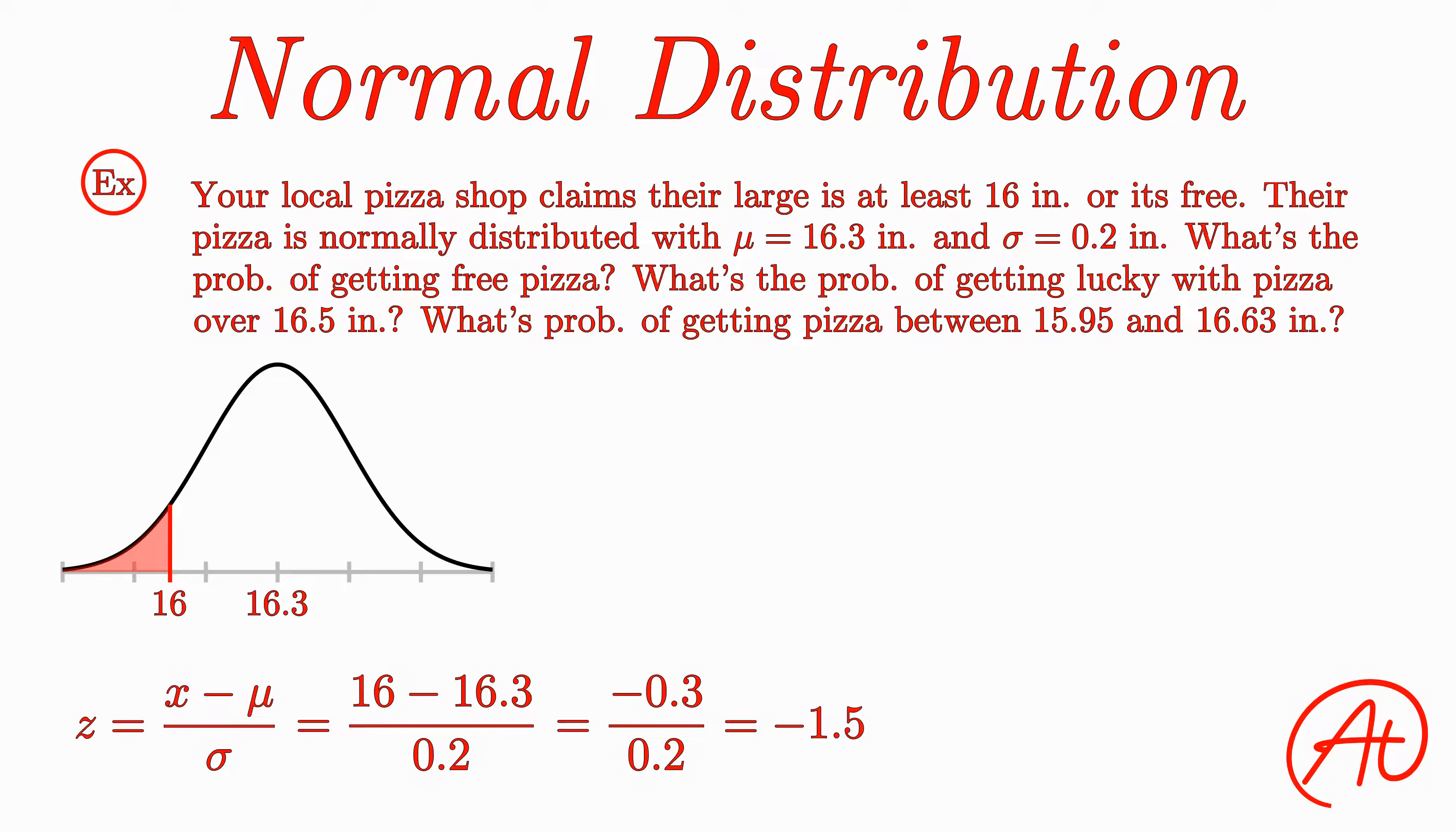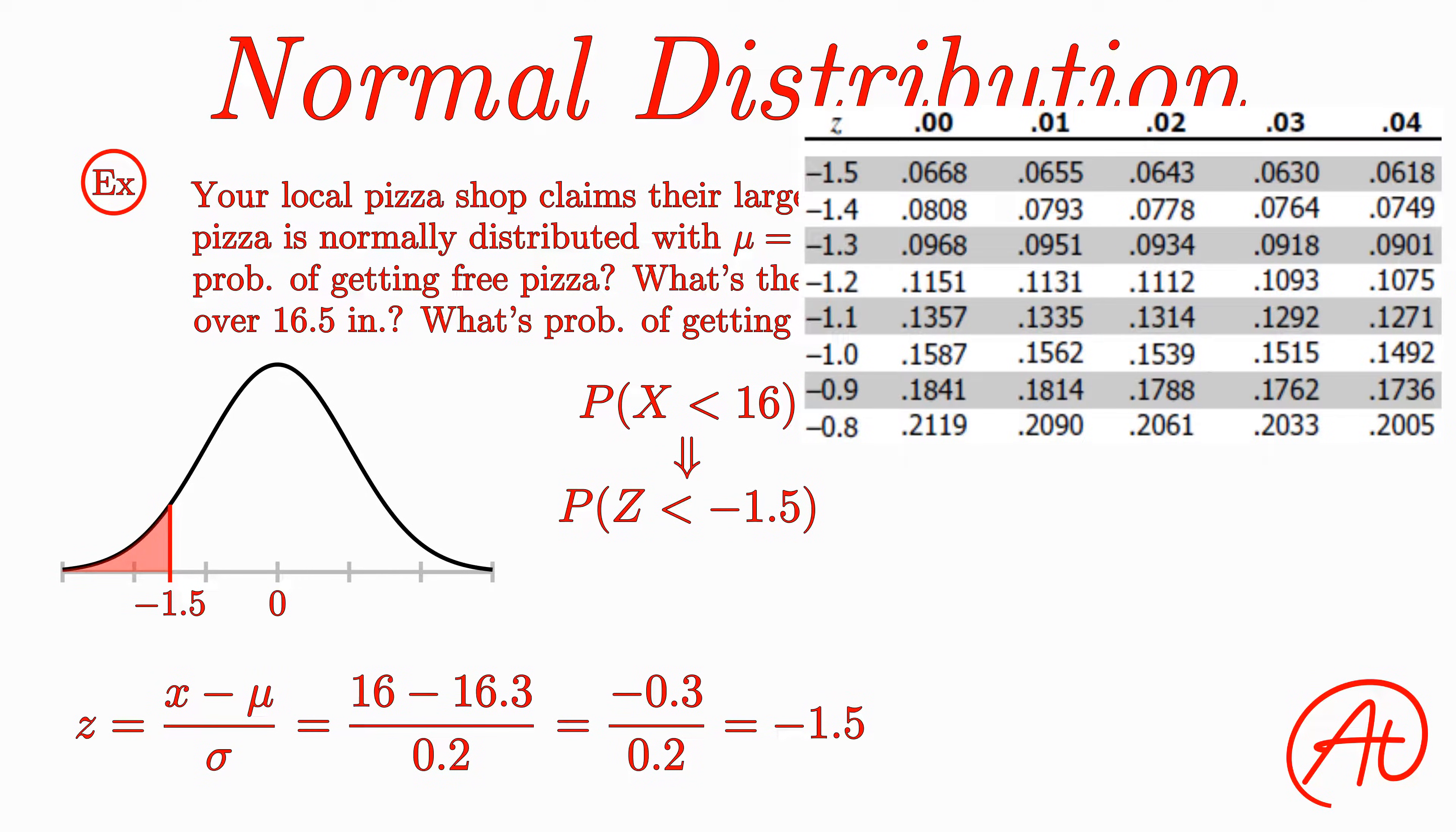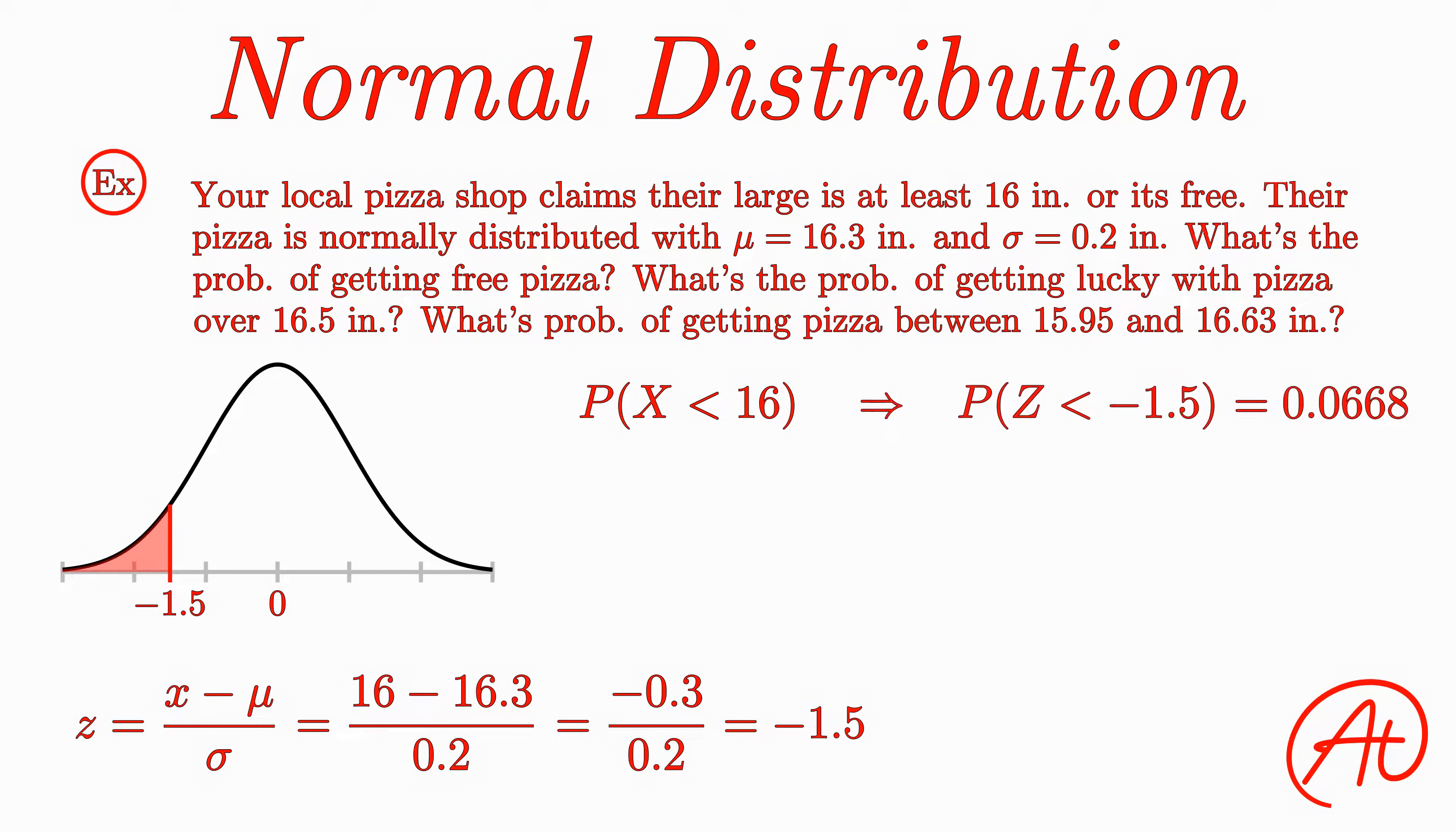So instead of finding the probability of a pizza being less than 16 inches, we are now finding the probability of a pizza having a z-score less than negative 1.5. Now that we have a z-score, we can use our z-chart to find its associated probability. Looking at row negative 1.5 and column 0.00, we find a probability of 0.0668. Since we want to find the probability of being less than our z-score, and that being exactly what the chart gives us, we are done. We have a 6.68% chance of getting a free pizza.